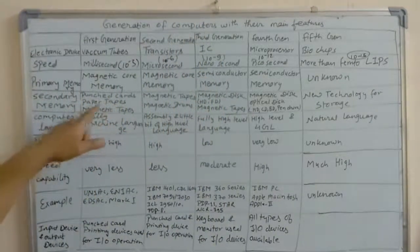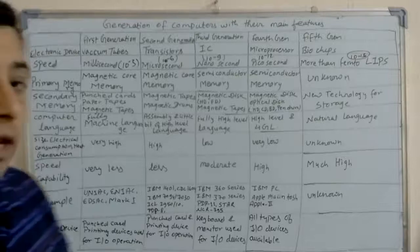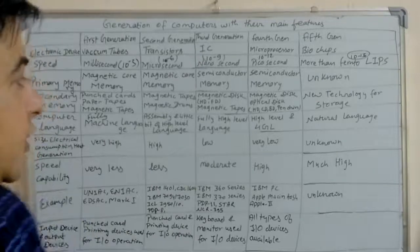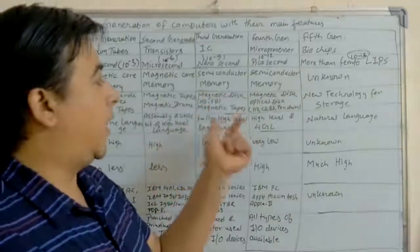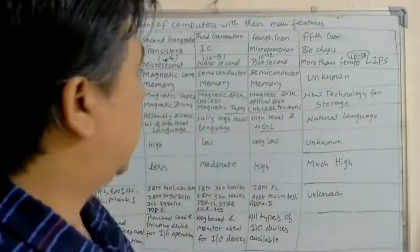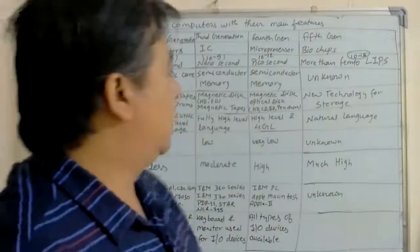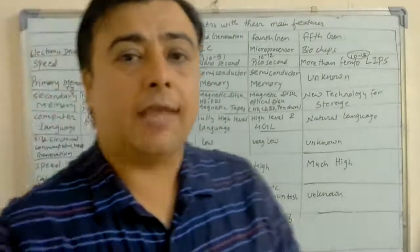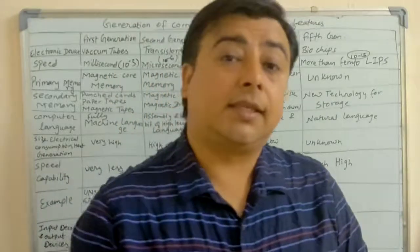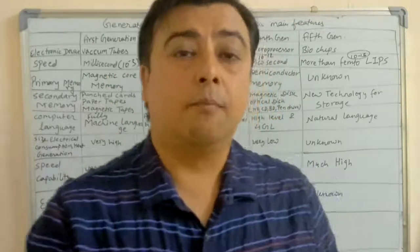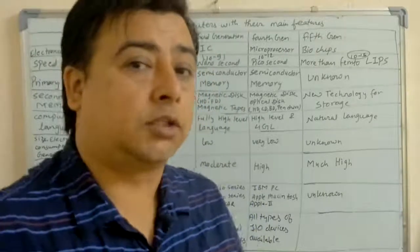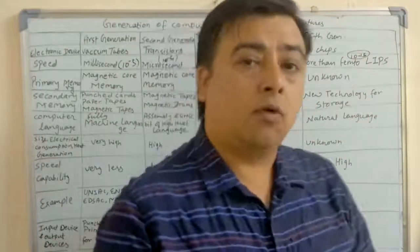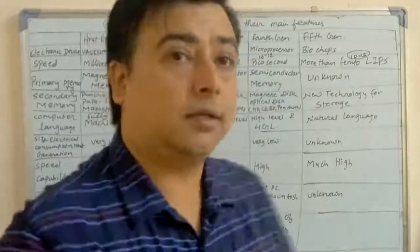For secondary memory: punch cards, paper tape, and magnetic tape were used in the first generation. Magnetic tapes and magnetic drums were used in the second generation. Magnetic disks like hard disks, floppy disks, and magnetic tape were used in the third generation. In the fourth generation, we use magnetic disks like hard disks, pen drives, as well as optical disks like CD, DVD, and Blu-ray discs. In the fifth generation, new technology for storage will come.